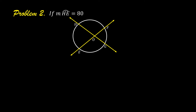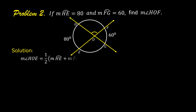Let us solve problem number two. If the measure of arc HE is equal to 80 and the measure of arc FG is equal to 60, find the measure of angle HOF. The measure of angle HOF is equal to one-half times the quantity: measure of arc HE plus measure of arc FG.